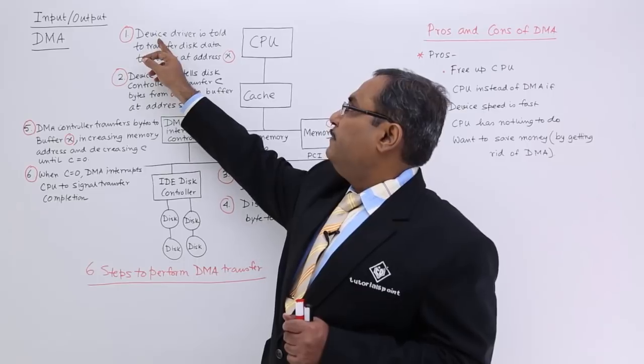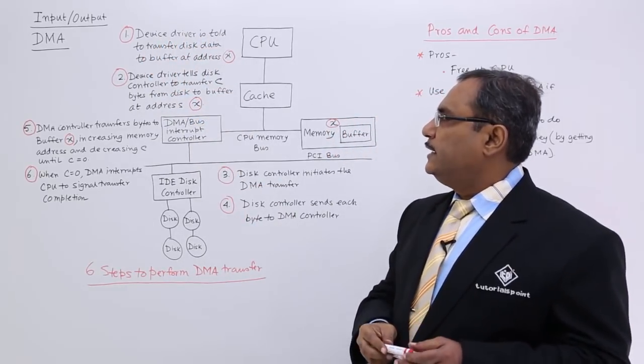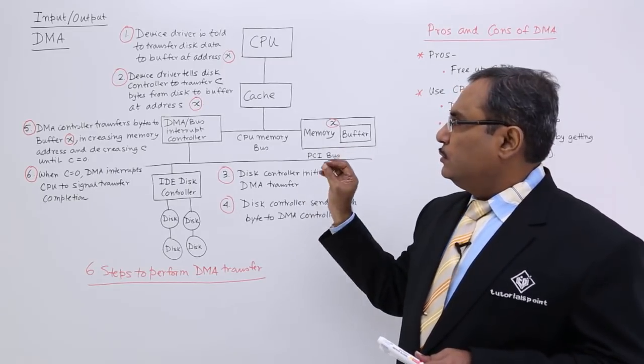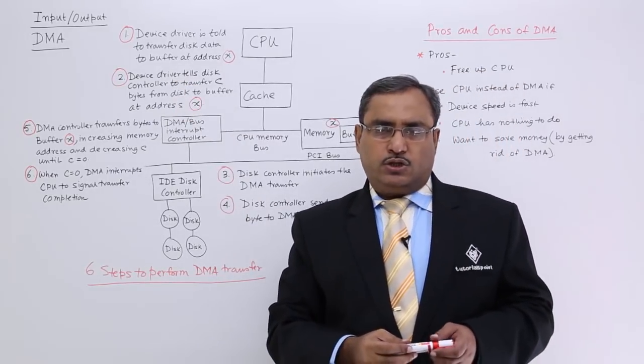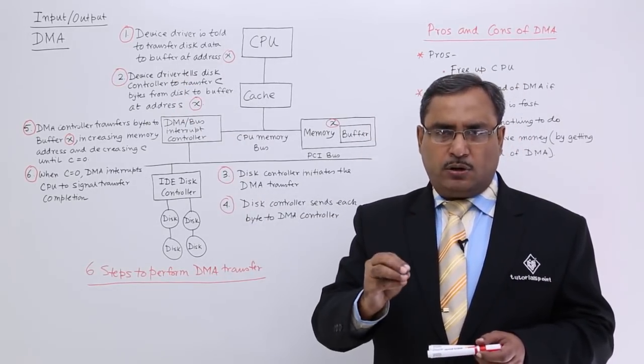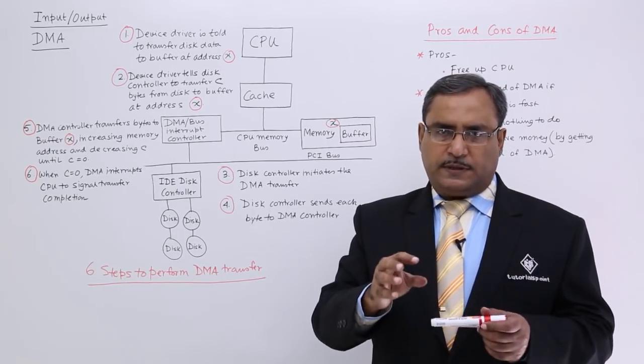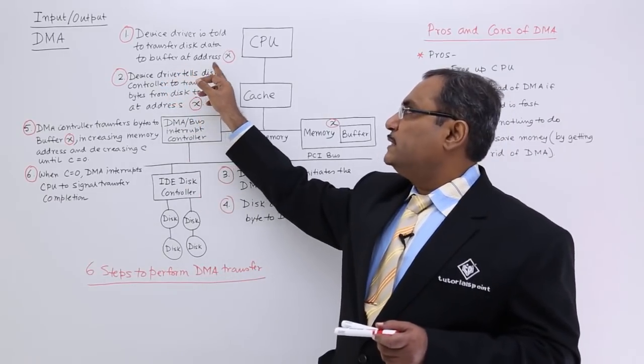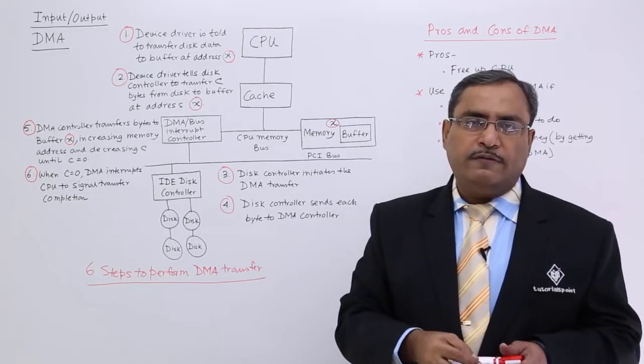Step number 1, device driver is told to transfer disk data to buffer at address x. That means device driver has got one instruction from the CPU, please transfer some bytes from some disk to the buffer space at address x. It has been conveyed to the device driver.